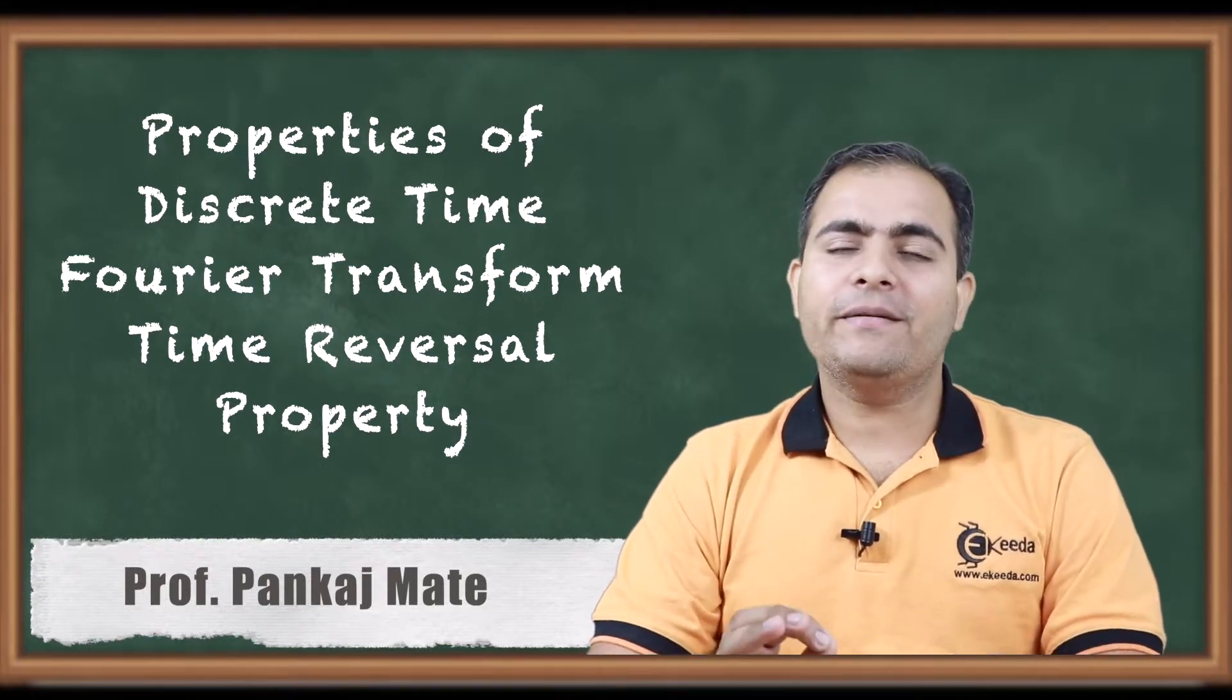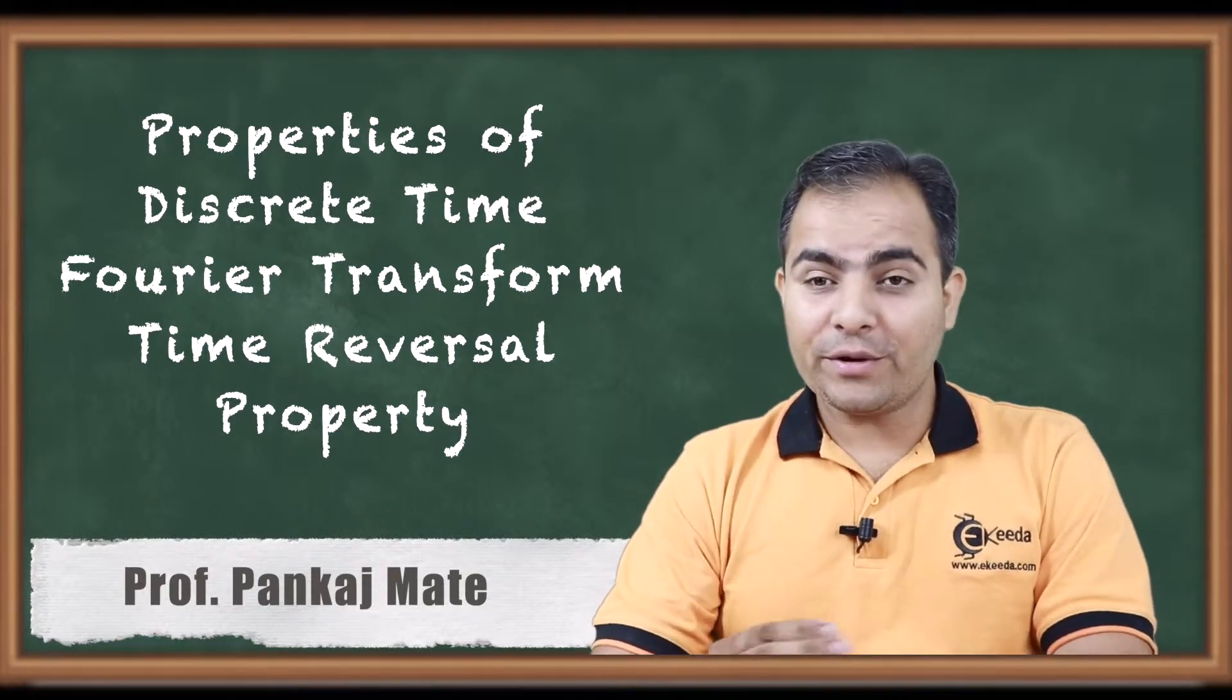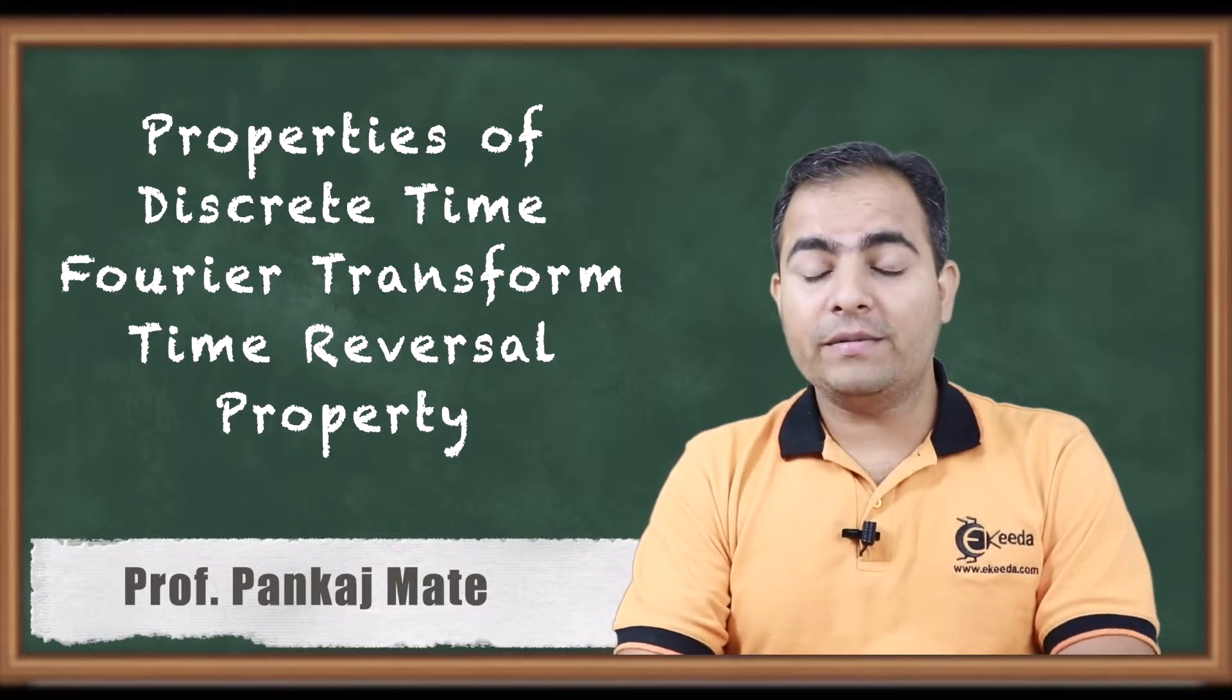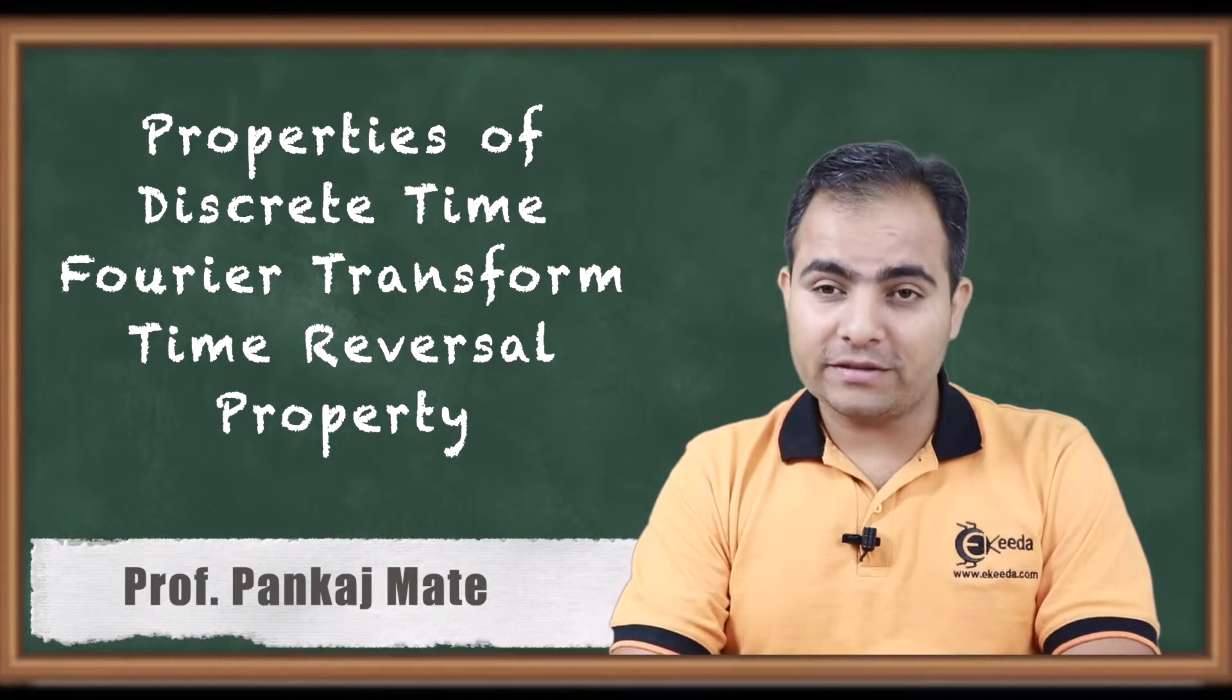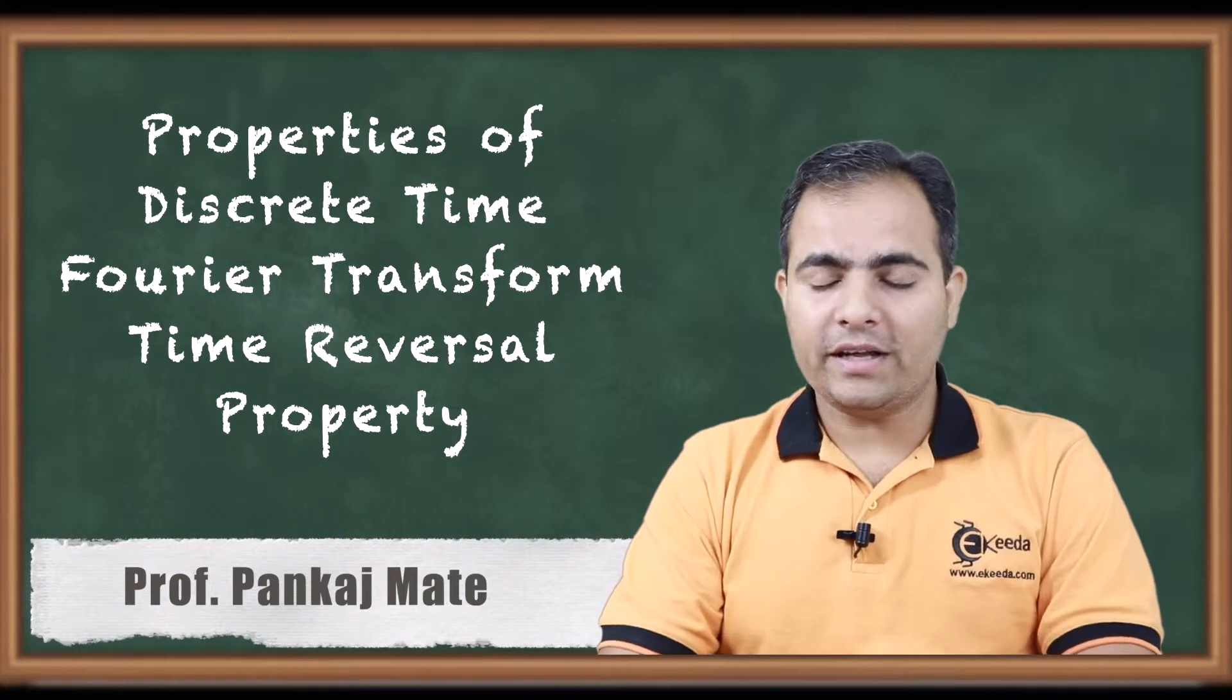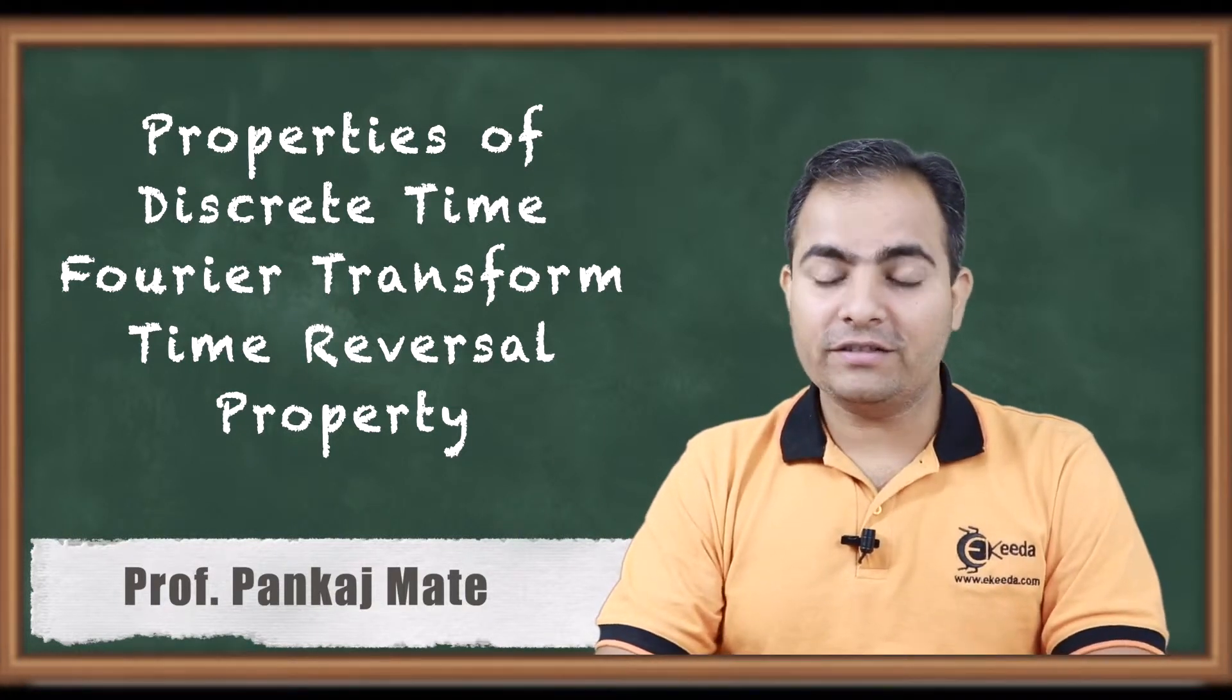What do you mean by time reversal? Simply nothing but the mirror image. If you are going to find out the mirror image of x of n, then what will be the effect of this mirror image in discrete time Fourier transform? So let's see, first of all the statement and then we'll move on to solution, that is the proof.